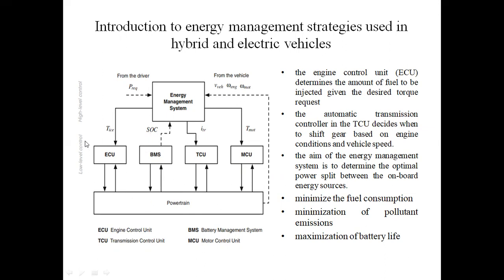In this diagram, there are two control levels. One is the high-level control, which is the Energy Management System (EMS). The second is the low-level control, which includes ECU, BMS, TCU, and MCU. ECU means Engine Control Unit. BMS is the Battery Management System. TCU is the Transmission Control Unit. The fourth one, MCU, is the Motor Control Unit.